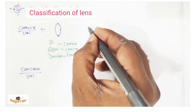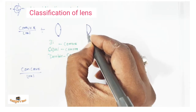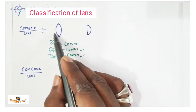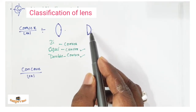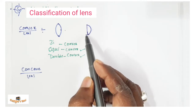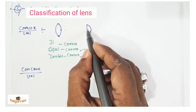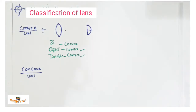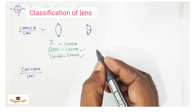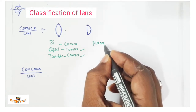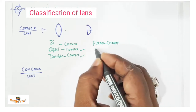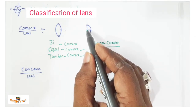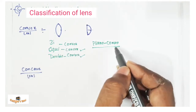Suppose we have a lens where one surface is plane and the other is spherical. It is thicker at the middle and thinner at the edge, so it belongs to convex. But since one surface is plane and one is spherical, this type of lens is called a plano-convex lens.